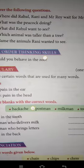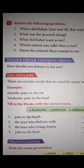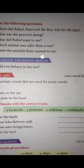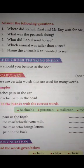The second exercise is Answer the Following Questions. There are five questions. First: Where did Rahul, Rani and Mr. Roy wait for Mr. Jain? Second: What was the peacock doing? Third: What did Rahul want to see? Fourth: Which animal was taller than a tree? And last: Name the animals Rani wants to see. Let us solve these questions and answers.